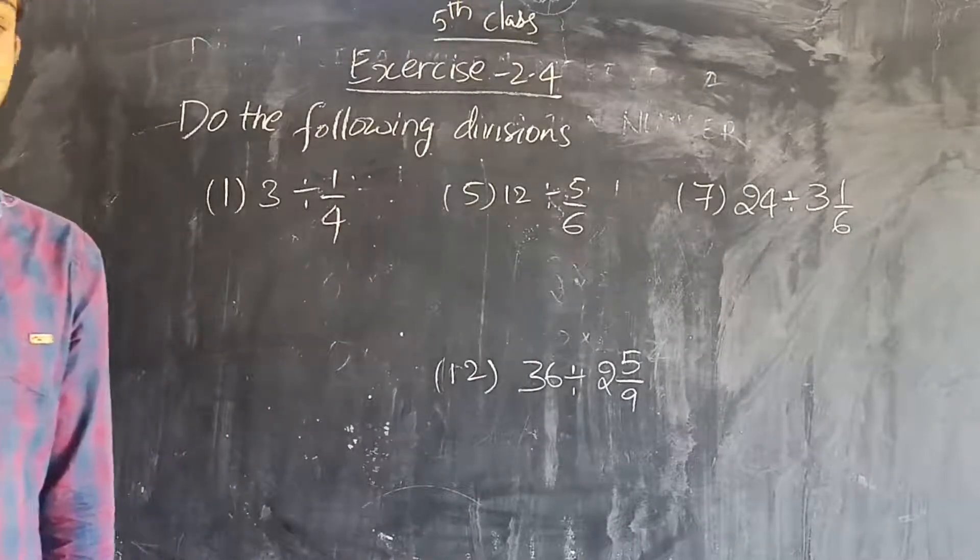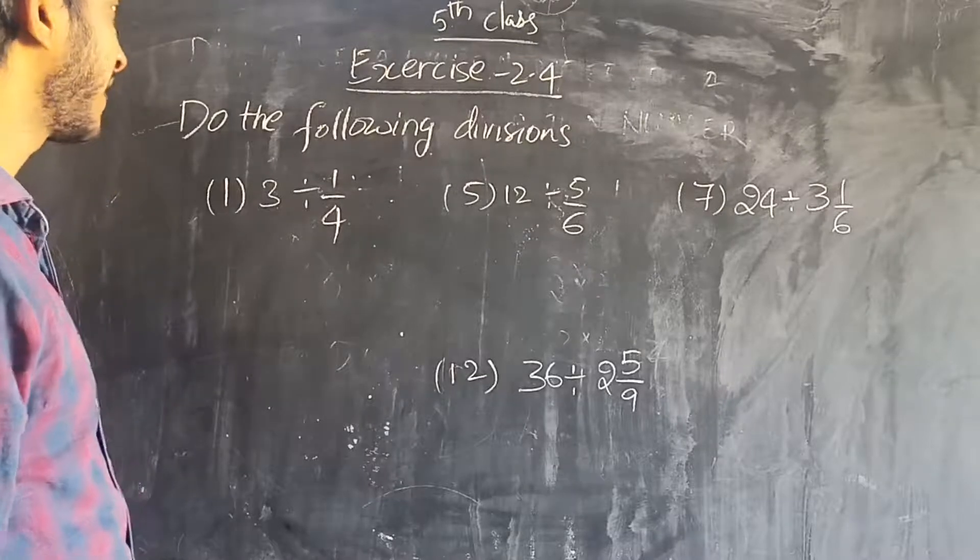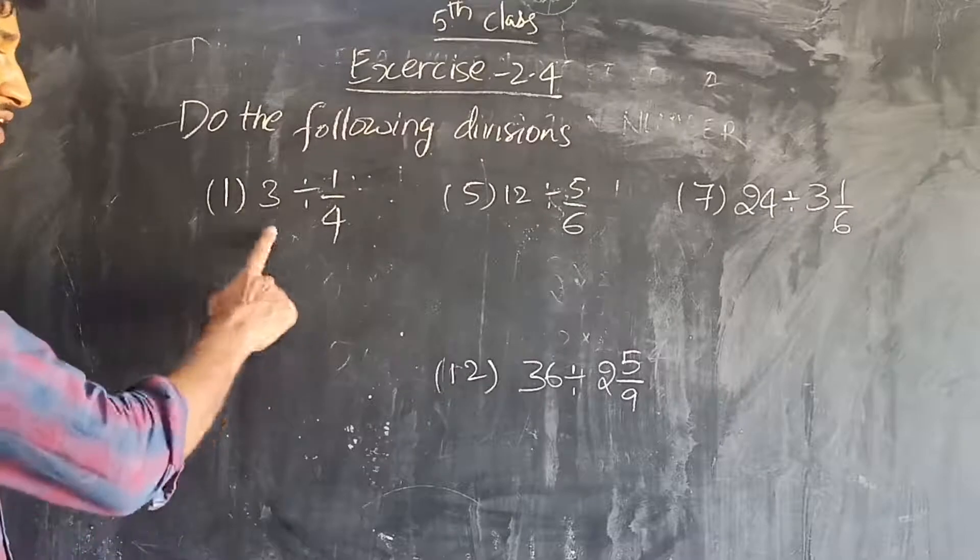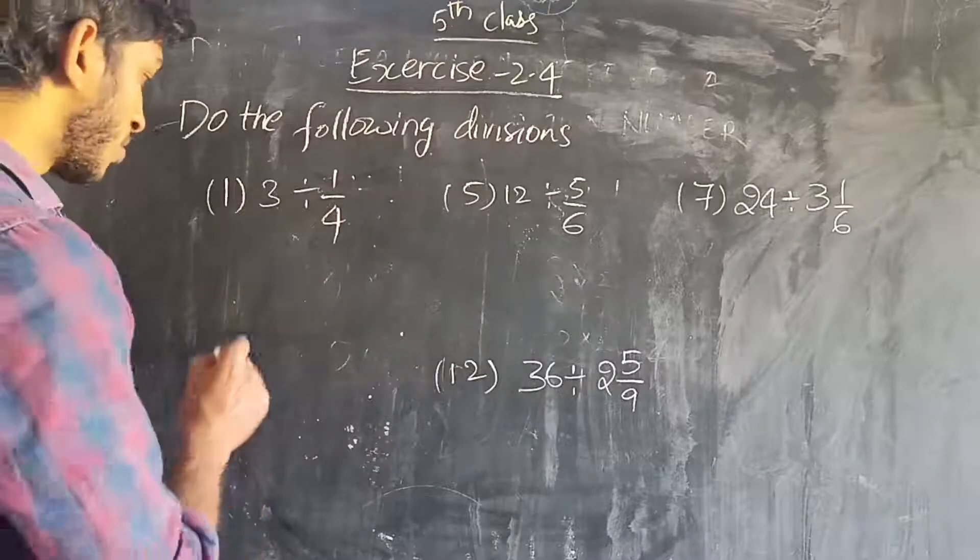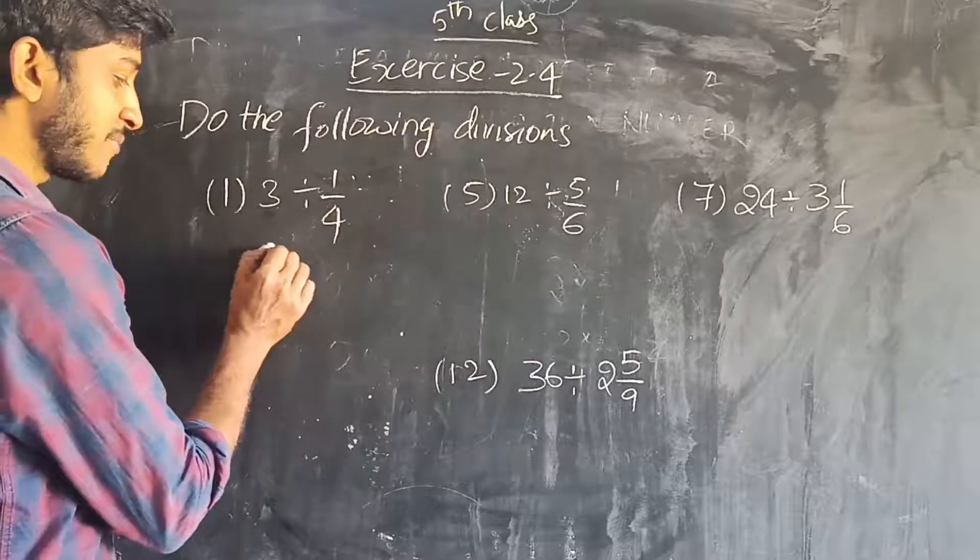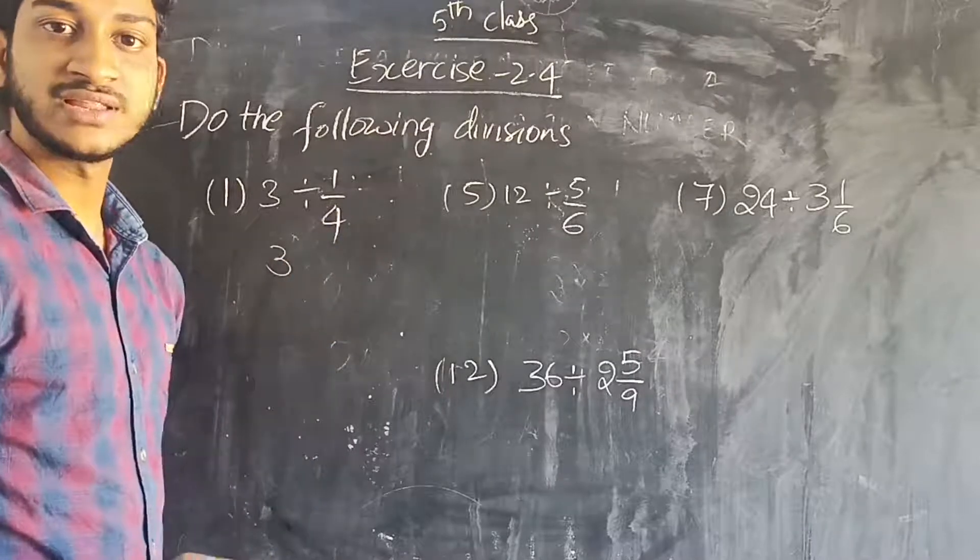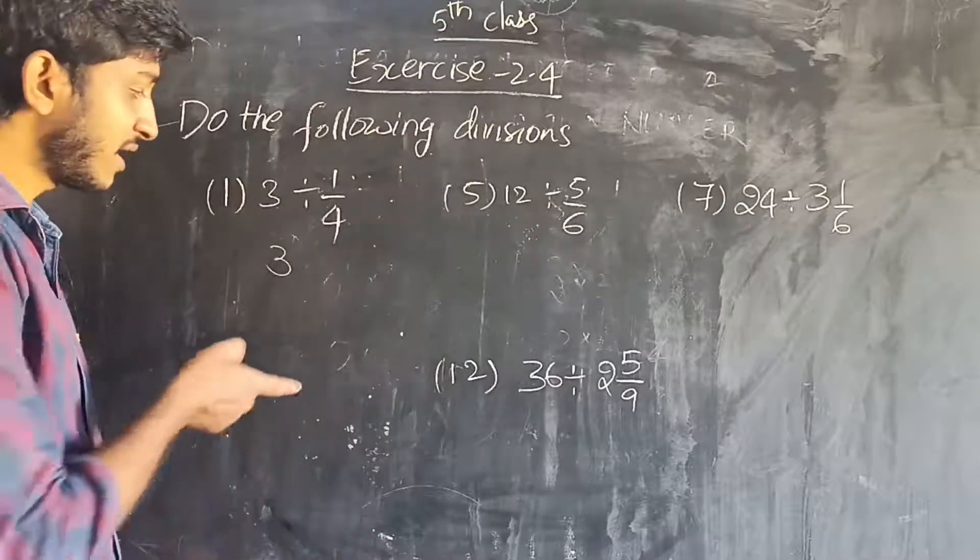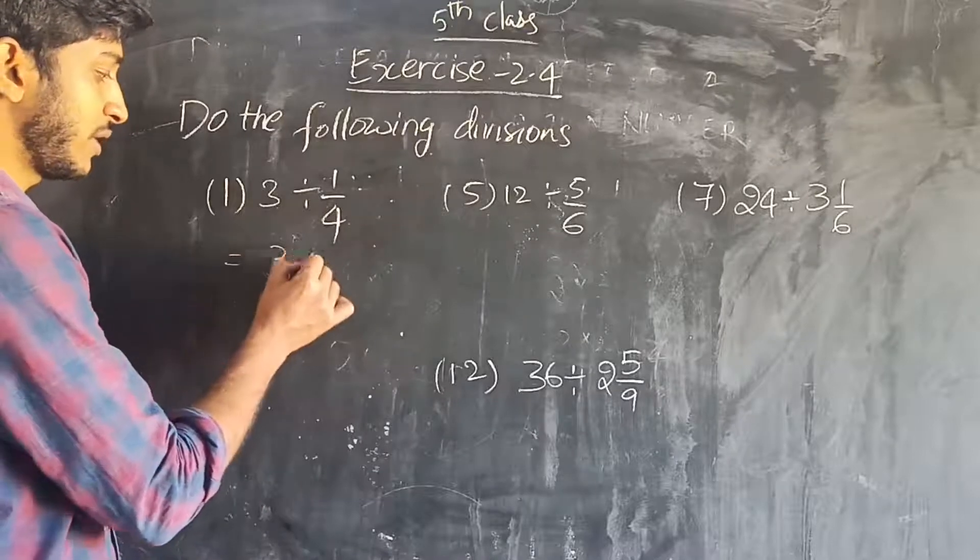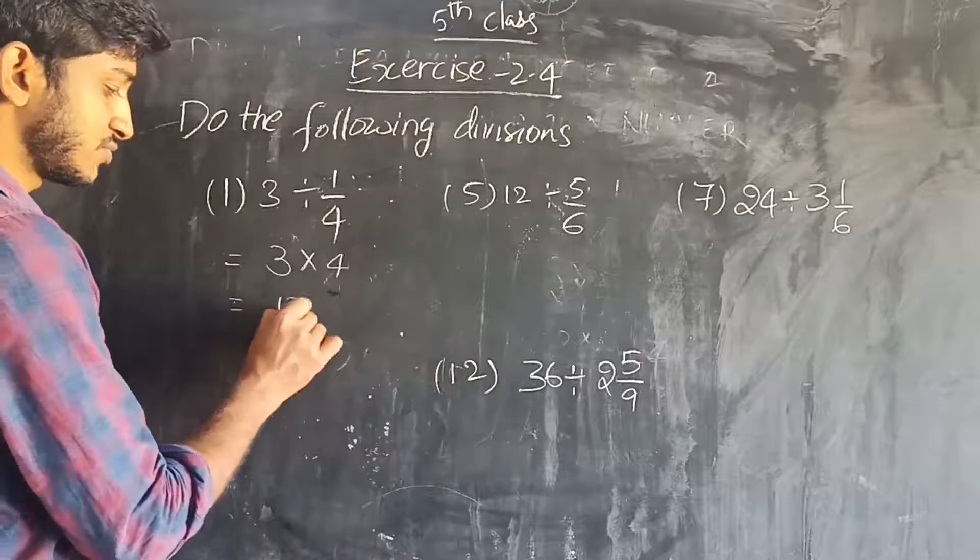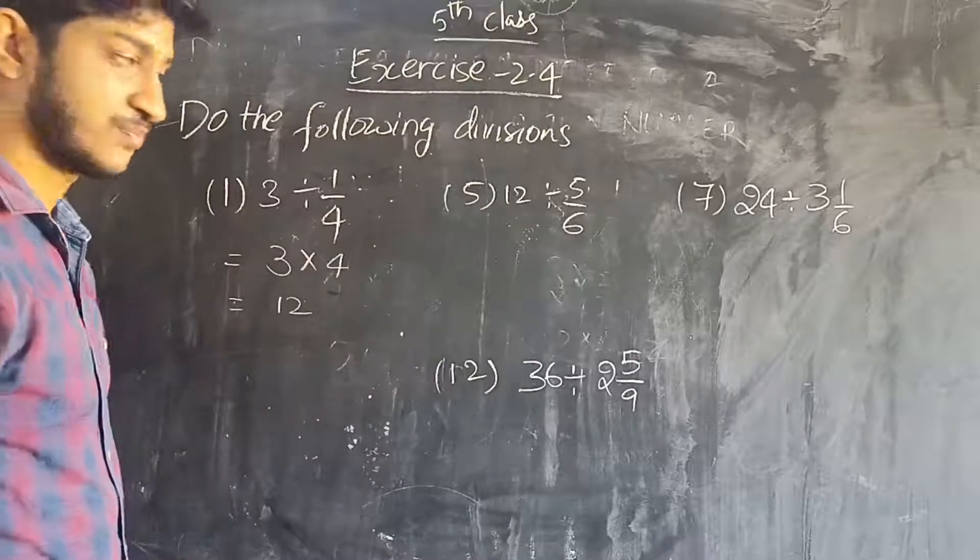Okay children, Exercise 2.4 in page number 19. In this, do the following divisions. So in the first one children, 3 divided by 1 by 4. So here whole number is same, and 1 by 4 reciprocal is 4. And in this, do the multiply. So 3 into 4 is 12. 12 is the answer.